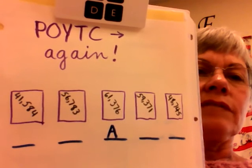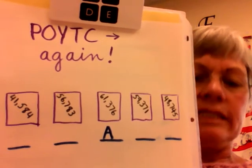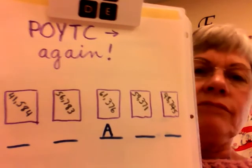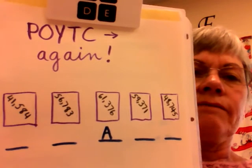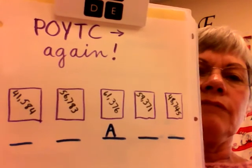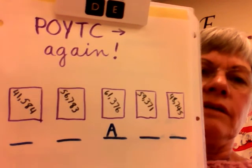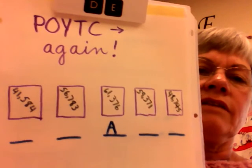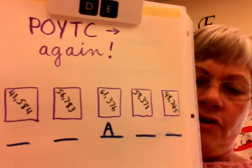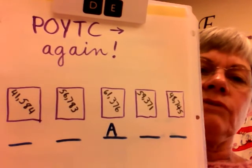Here are the clues. I'll read each clue twice. The number on card A is the greatest number. Again, that clue is the number on card A is the greatest number.